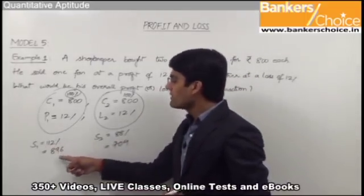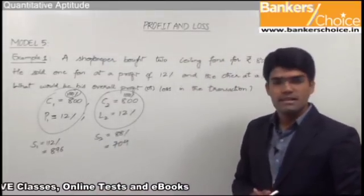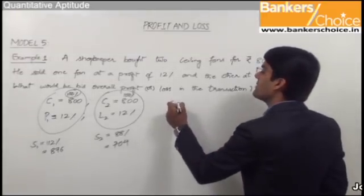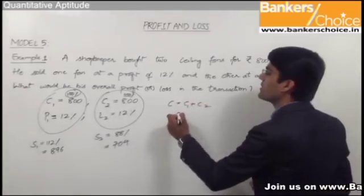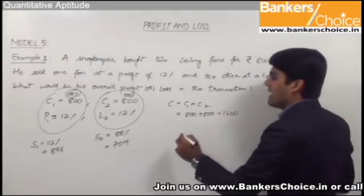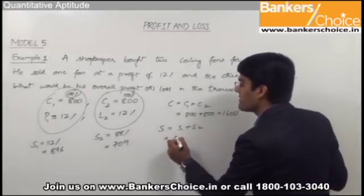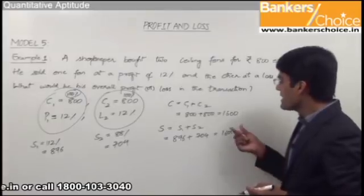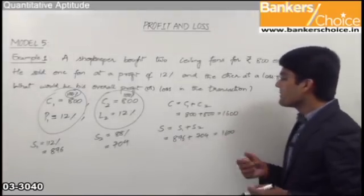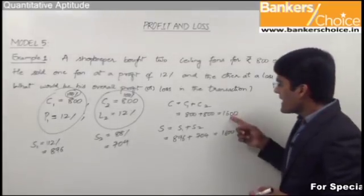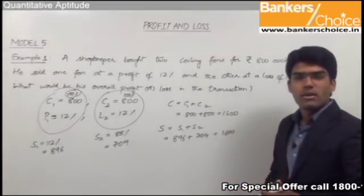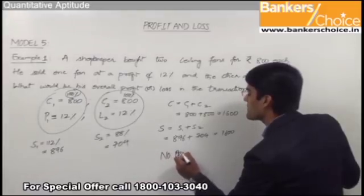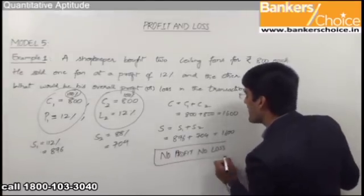So SP1 = Rs. 896 and SP2 = Rs. 704. Overall CP = C1 + C2 = 800 + 800 = Rs. 1600. Overall SP = S1 + S2 = 896 + 704 = Rs. 1600. Since the overall cost price and overall selling price are both Rs. 1600, there is no profit and no loss in this transaction.